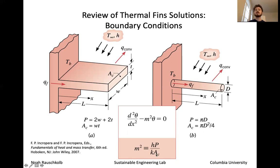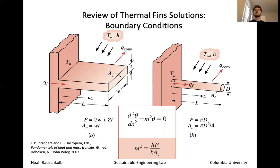That m² term is divided by the thermal conductivity times Ac, the cross-sectional area of the FIN, whether measured as thickness times width, or πD²/4 or πR² for a circular FIN. The critical thing to understand is that the exact geometry doesn't matter that much as long as you're being consistent with how you track both the cross-sectional area and the perimeter.